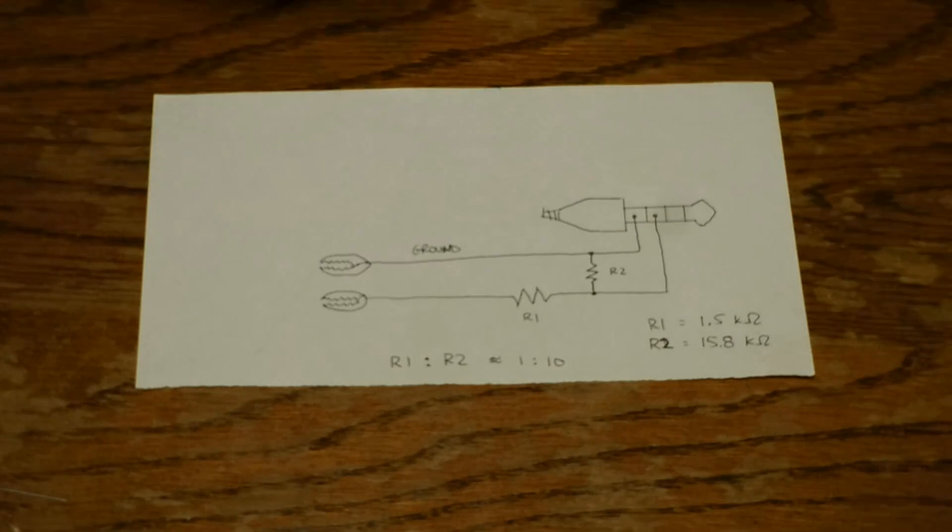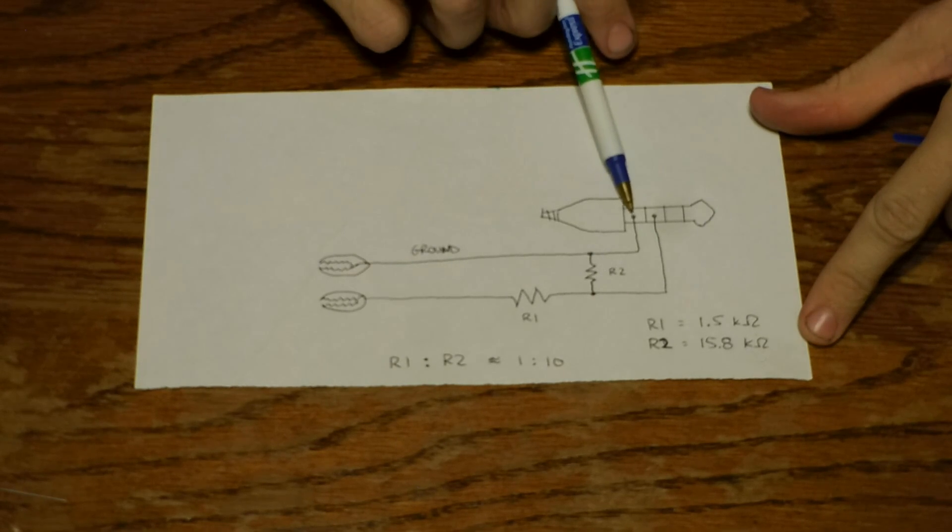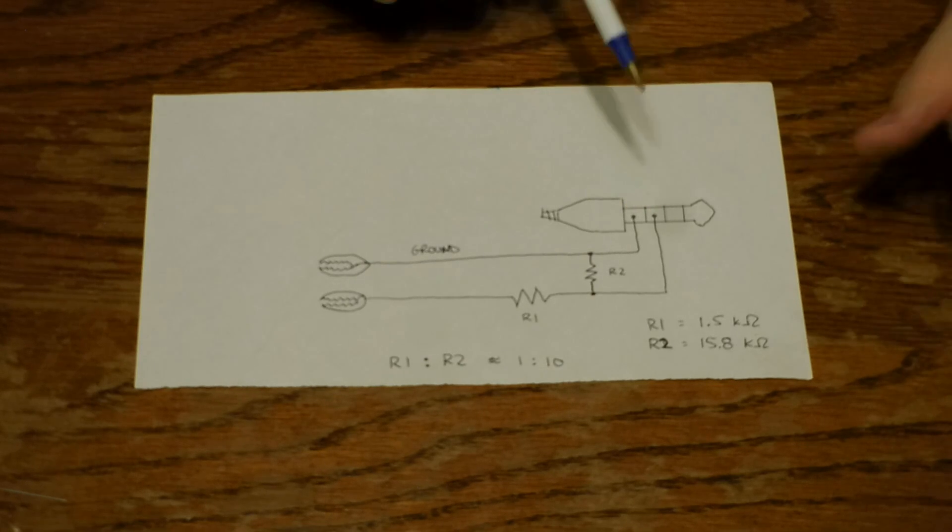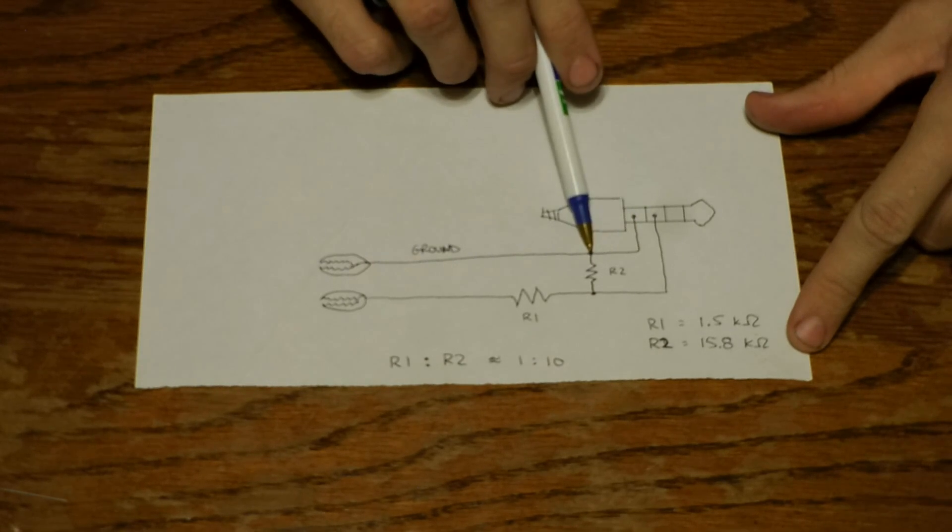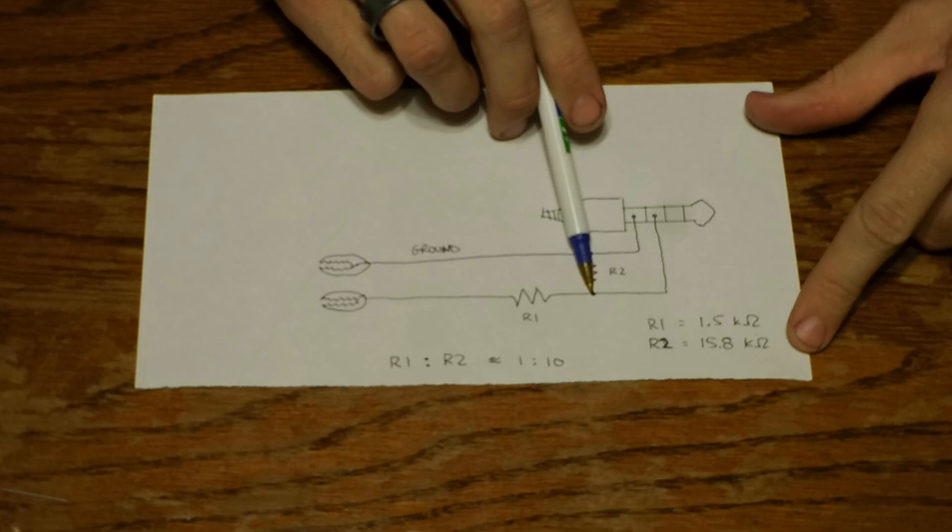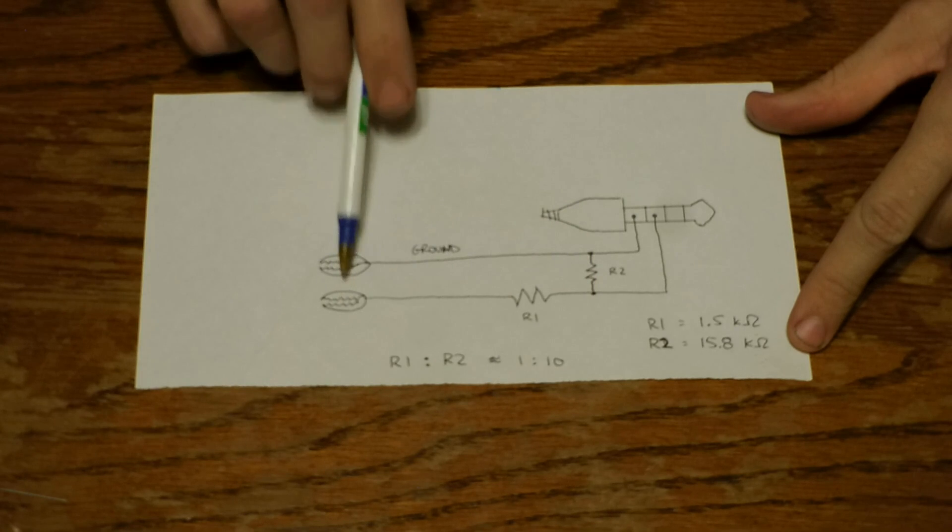So, this is a basic circuit diagram. From our 3.5mm jack, we're going to have the sleeve, which is ground, and the ring, which will be your signal. You can see it comes through, and I've got one resistor that crosses over to the other wire, and then a resistor in line with that, and these are just both going to go to the alligator clips.